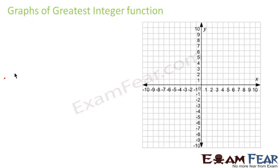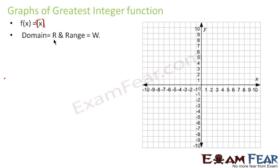The graph of the greatest integer function. What is the greatest integer function? It takes the greatest integer value and is denoted by box-brackets around x. The domain is all real numbers R, and the range is only whole numbers — because if you give 1.2 it will give 1, and if you give 1.7 it will also give 1.